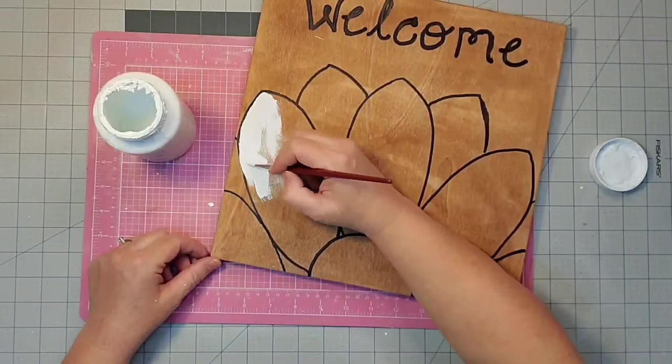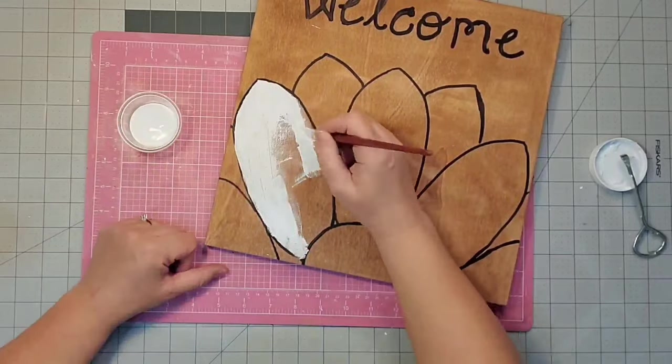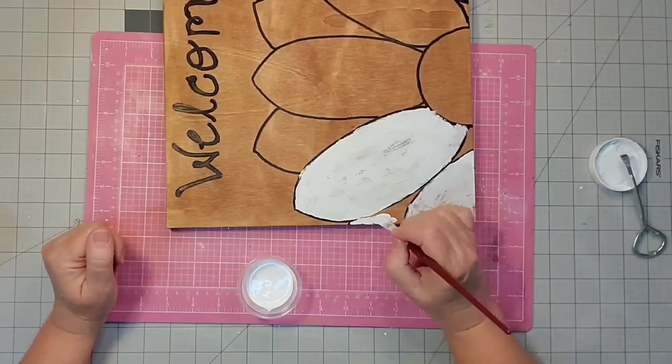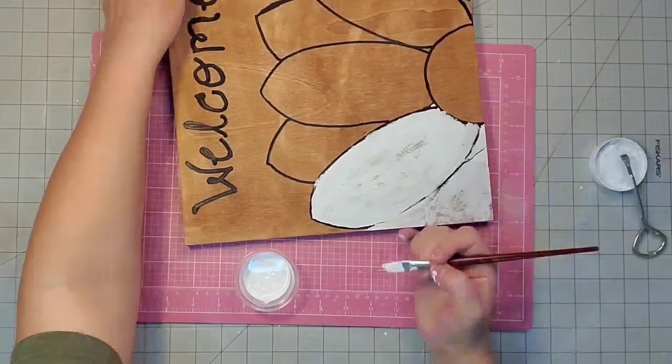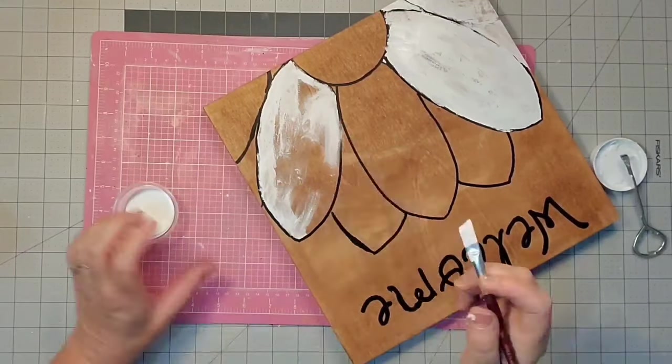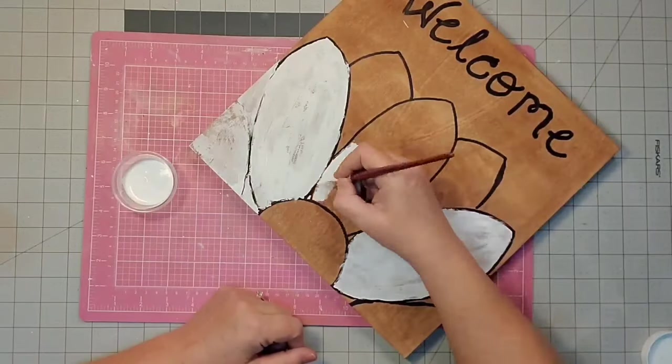Now I'm going to use my white Waverly chalk paint and just start filling in on my petals. I do get a little heavy handed at first, but I go back and wipe some of it off. I just use my finger to smudge things. I want it to look kind of old and chippy, just a little bit antique.